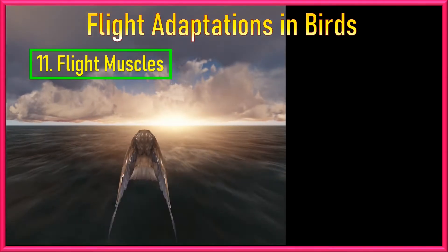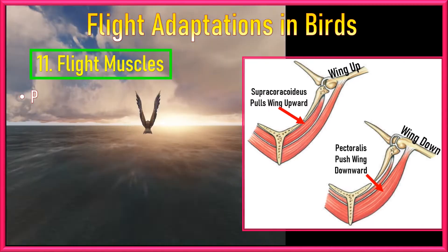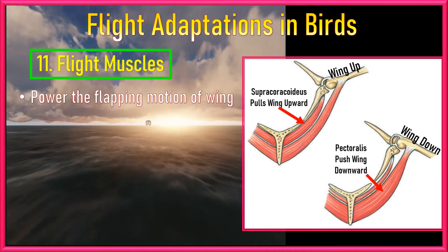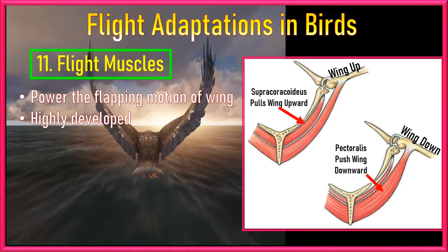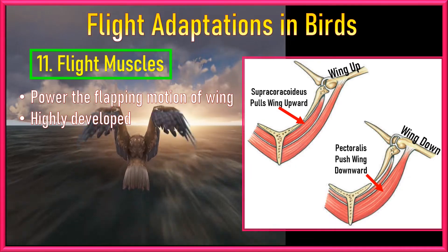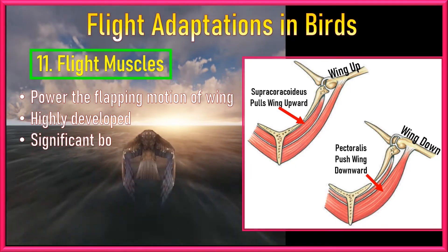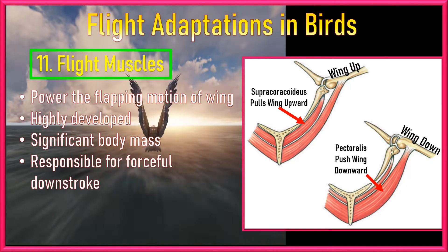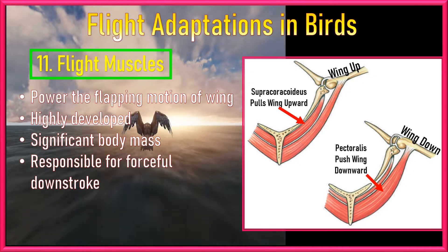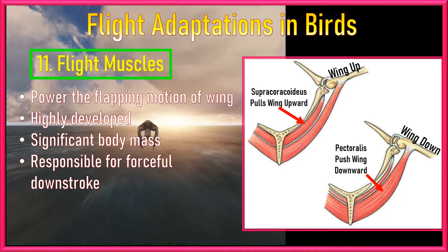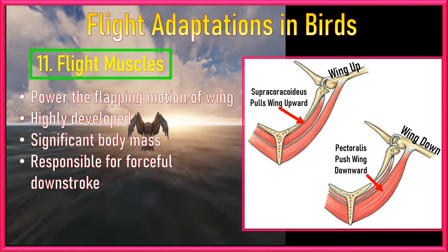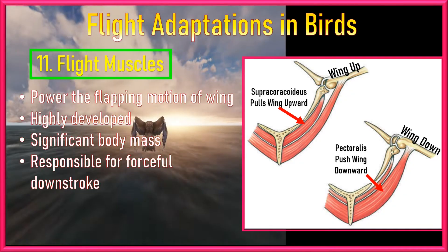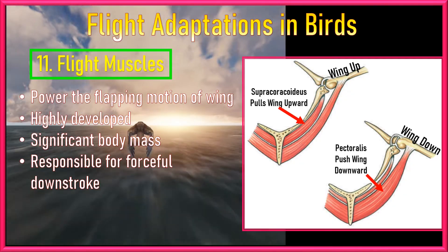Number 11: Flight Muscles. The pectoral muscles, which power the flapping motion of the wings, are highly developed in birds. These muscles make up a significant portion of the bird's body mass and are responsible for the forceful downstroke during flight, because the downstroke requires more power to push the air down to lift the body upward. That's why birds have adopted strong pectoral muscles.